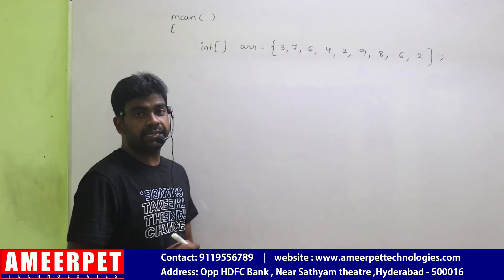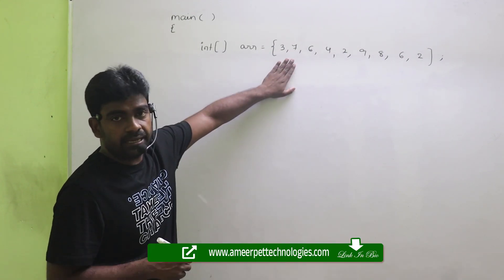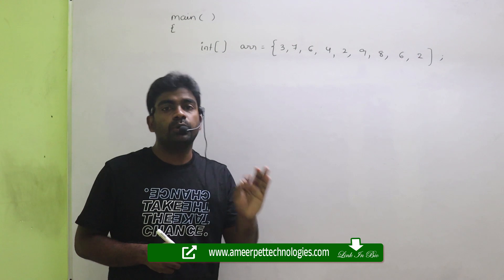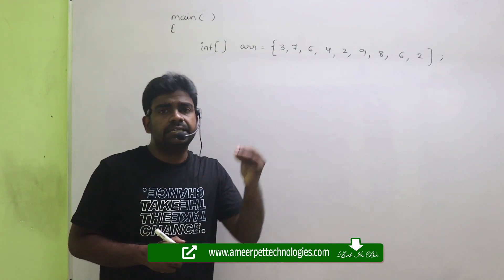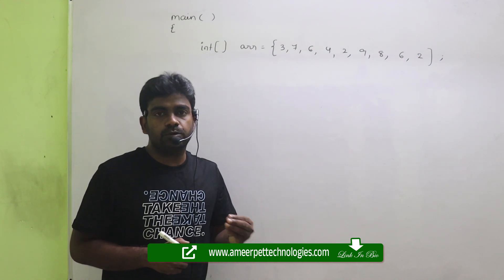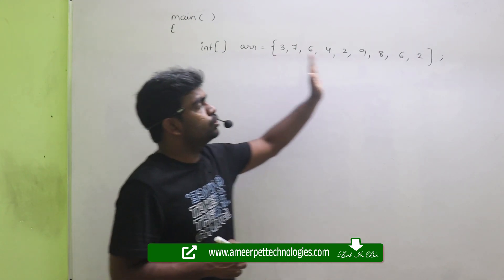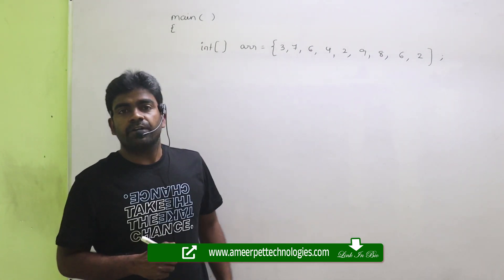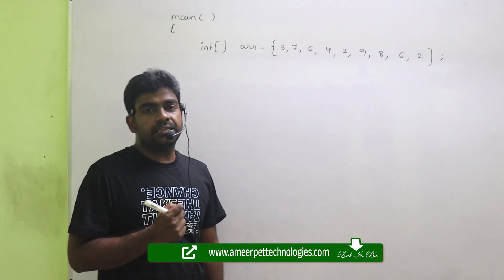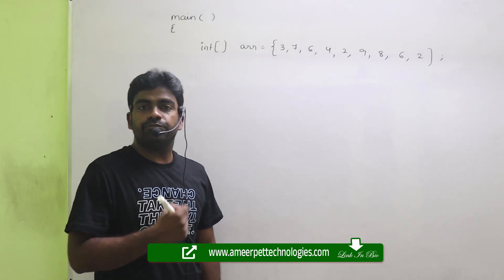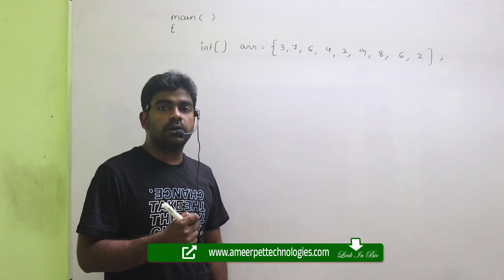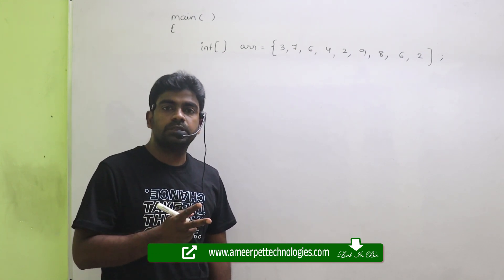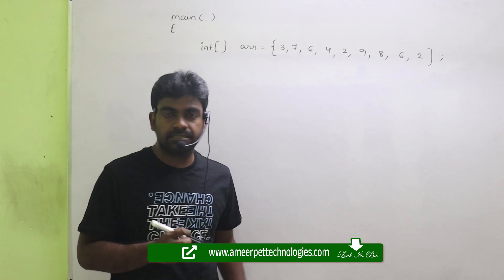So this is the array given. From this array I just want to print only even numbers. Each number we need to check from start to end. We have two options: either we can go with the for loop or we can go with the for-each loop, and with both the loops I will explain clearly.